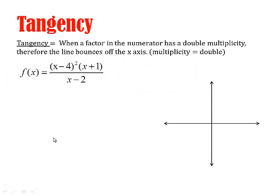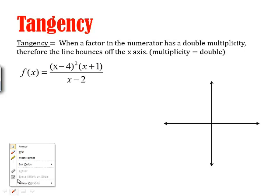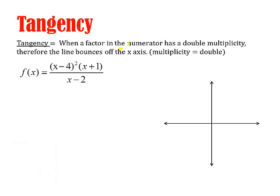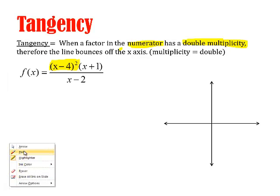With tangency, tangency is when a factor in the numerator has a double multiplicity. Remember double multiplicity? So look at this example of this equation. If this factor right here has a double multiplicity, x minus 4 squared, that's a double multiplicity.